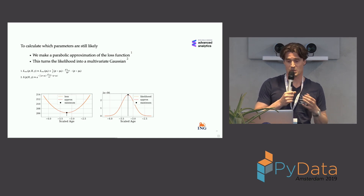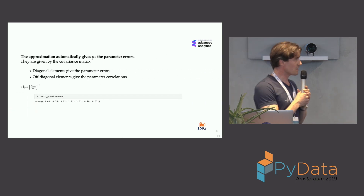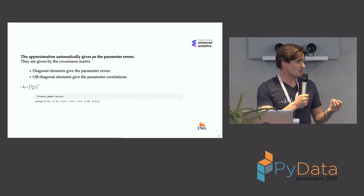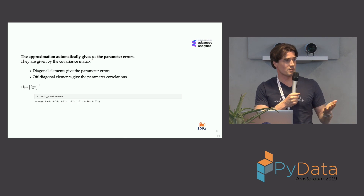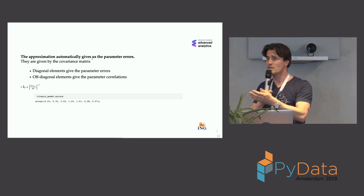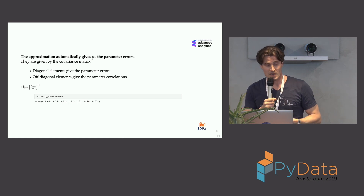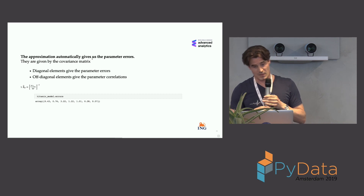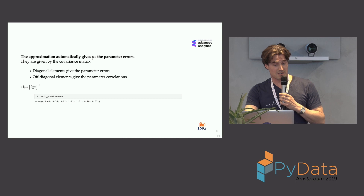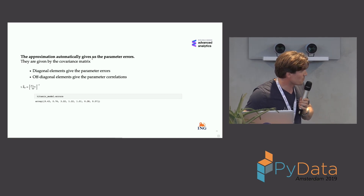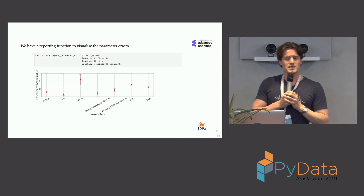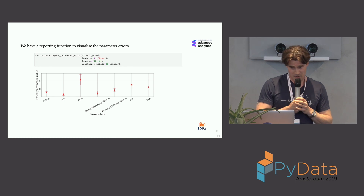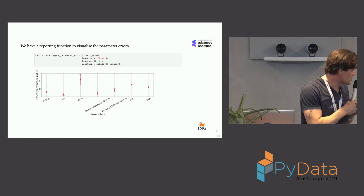This parabolic approximation has a nice benefit for the likelihood because it turns it into a multivariate normal distribution. The errors roll right out because a multivariate normal distribution has a covariance matrix, which contains all the information we need. On the diagonal of this matrix you find the errors on the parameters, and off-diagonally the correlations between parameters. You can ask our model for the errors on the parameters, and we also made a reporting function to visualize these parameters and their uncertainties in one plot.